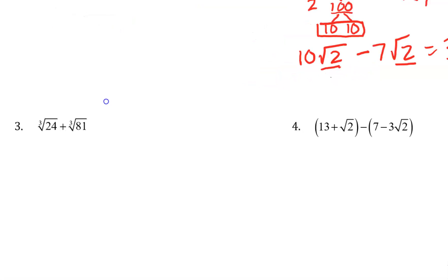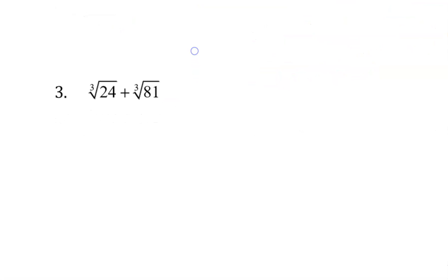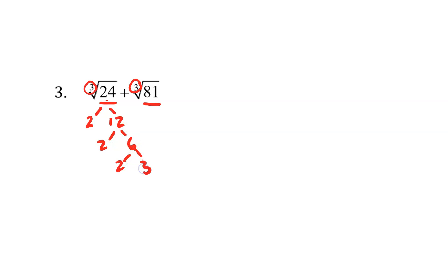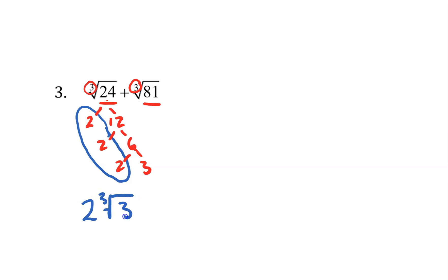The next one is a cube root, so we don't immediately recognize these as being like radicals, but let's simplify them. 24 is factorable to 2 times 12, 12 is 2 times 6, and 6 is 2 times 3. This is a cube root, so we need a triplet — 3 of a kind. Here we have three 2's as factors, so we can take that outside of the radical. This becomes 2 times the cube root of 3.